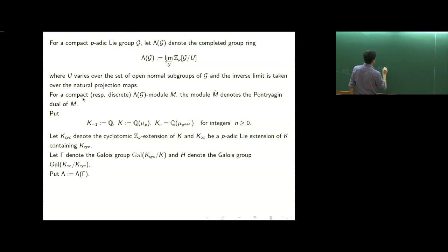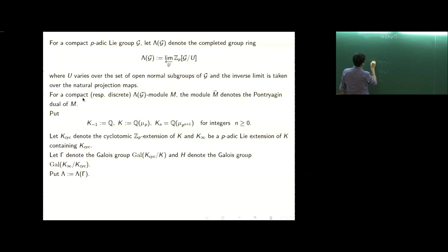We have Q(μ_P), then Q(μ_{P^2}), and so on, calling the union Q(μ_{P^∞}), denoted K_∞. Inside this tower, we have the cyclotomic extension K_cyc, whose Galois group is isomorphic to Z_P, which I also denote by Γ. Whenever G is Γ, we denote the completed group ring by Λ.